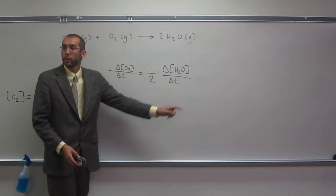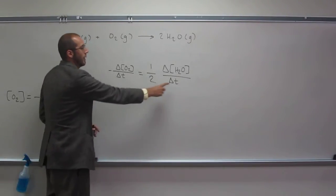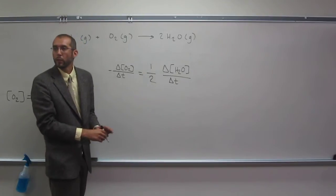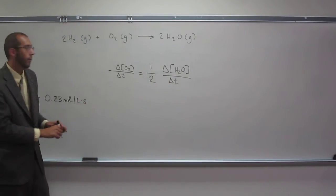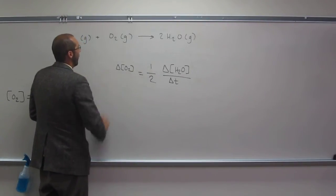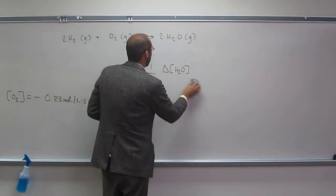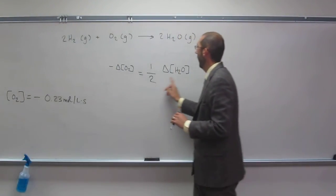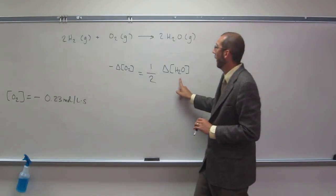So we're looking for, so delta T is going to be the same, right? So we can cancel that out on each side. Do you guys see that? Delta T is equivalent to delta T. So effectively, what do we got? We got negative change of O2 equals one-half times the change of H2O. Is everybody okay with that?